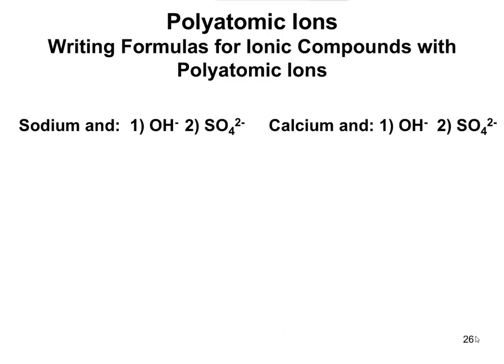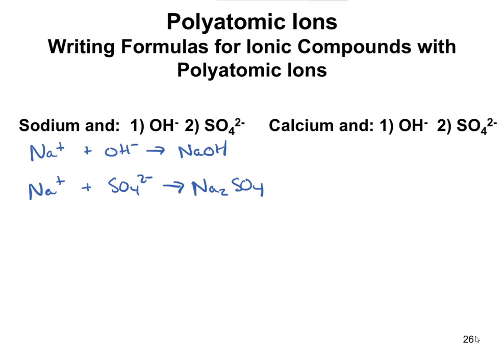Let's do a few practice problems: sodium with OH minus, and sodium with sulfate. Sodium is Na+. Na+ and OH- gives us NaOH — written just like that, no parentheses needed since it's one of each. For Na+ plus SO4 2-, sodium has a plus 1 charge and sulfate is negative 2, so we need two sodiums to balance, giving Na2SO4. We don't need parentheses around sodium because we use parentheses only for polyatomic ions.